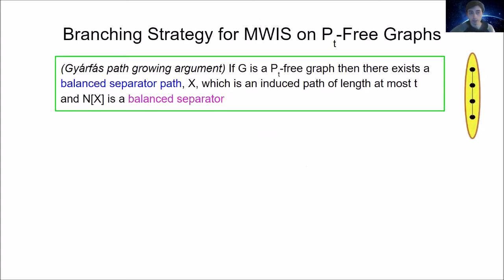The last idea I need to give before explaining how the algorithm works is the Gyárfás path argument. It states that if G is a P_t-free graph, then there exists a balanced separator path X — an induced path of length at most t — whose closed neighborhood is a balanced separator. Here's a picture: we have a P4 drawn, and its closed neighborhood is a balanced separator of the graph.